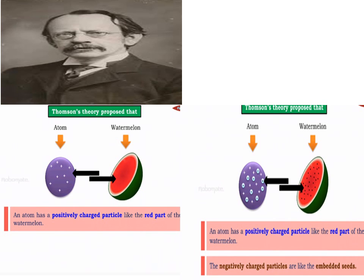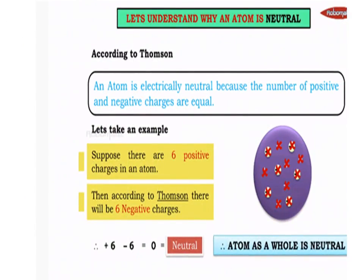Now let us understand why an atom is neutral. Neutral means no charge. According to Thompson, an atom is electrically neutral because the number of positive and negative charges are equal. For example, suppose there are 6 positive charges in an atom; according to Thompson, there will be 6 negative charges. Therefore, plus 6 minus 6 is equal to 0, and 0 means neutral. So the atom as a whole is neutral because the number of positive and negative charges are equal.